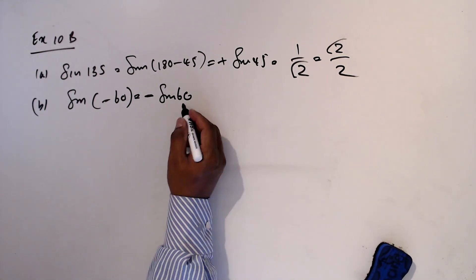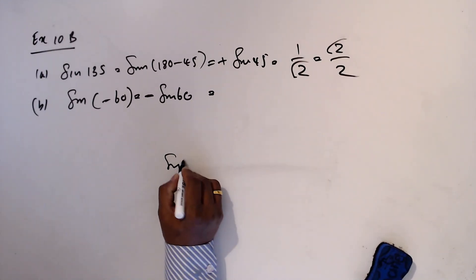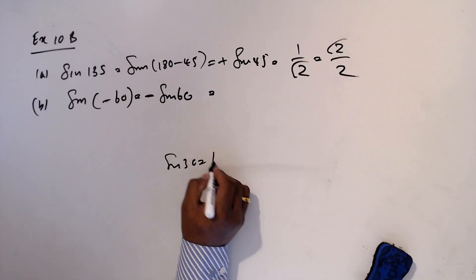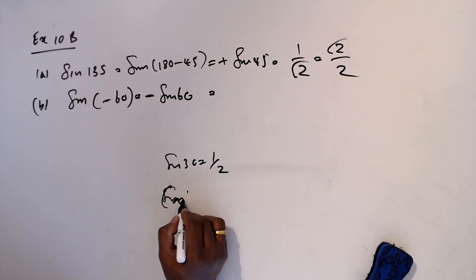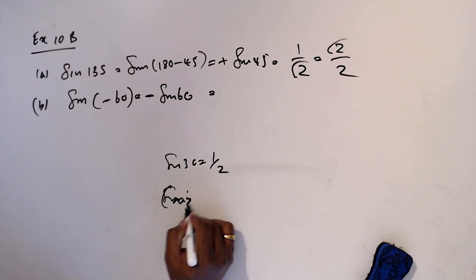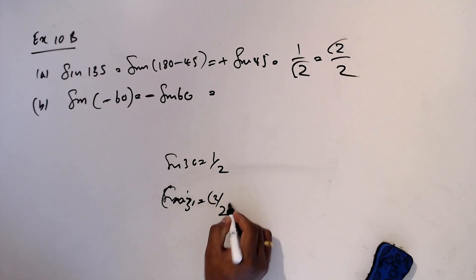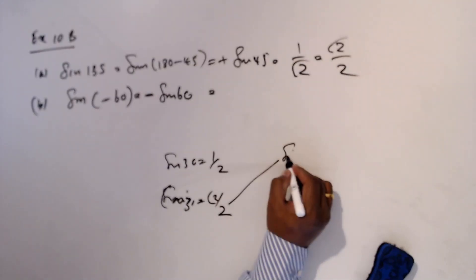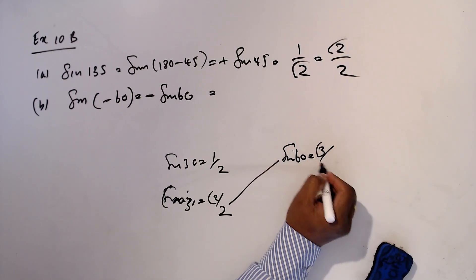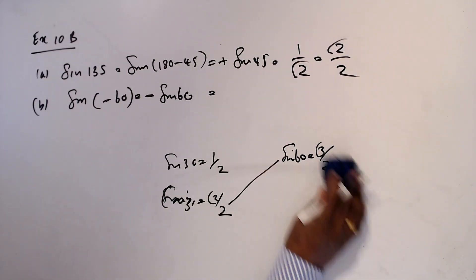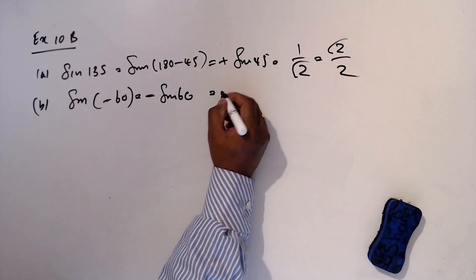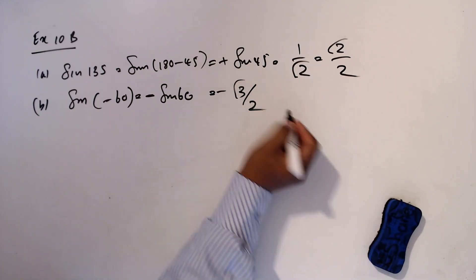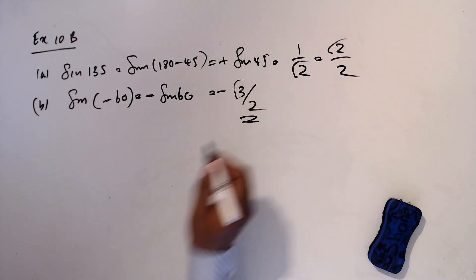Sine 30 is one half. Cos 30 is square root 3 over 2, so sine 60 is square root 3 over 2. Therefore sine minus 60 equals minus square root 3 over 2.